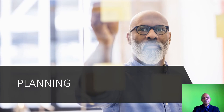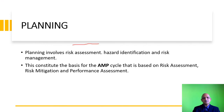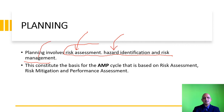We now move on to planning. Planning involves risk assessment, hazard identification and risk management. We first conduct a risk assessment, then identify hazards, and move on to risk management — we will cover this entire cycle in the second week of this MOOC. This constitutes the basis for the AMP cycle: risk assessment, risk mitigation, and performance assessment.